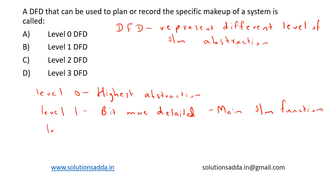At Level 2, it is used to plan or record specific makeup of the system. And at Level 3, it is used to represent very complex system designs only. Complex system designs are represented in Level 3 and it is very detailed.